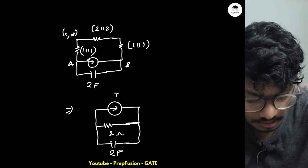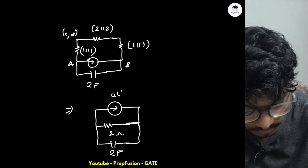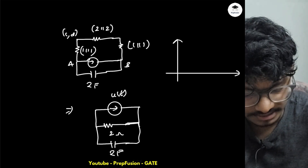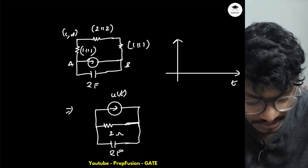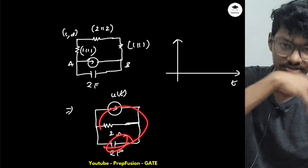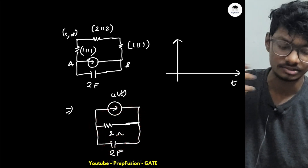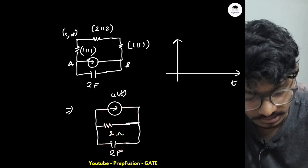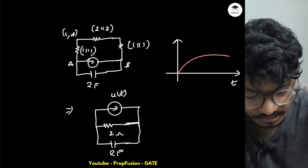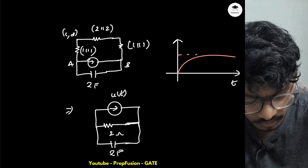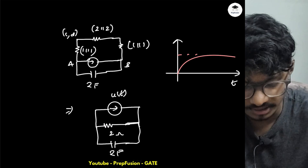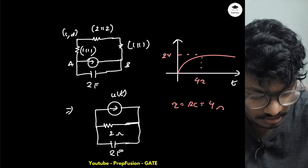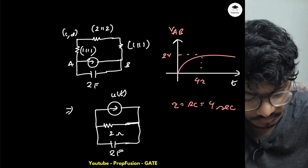The current source is a unit step u(t). For a simple parallel RC circuit: initially the capacitor is a short circuit so initial voltage across the resistor is zero. Then the capacitor charges, voltage rises exponentially. The final steady-state voltage is I × R = 1 × 2 = 2 V. The time constant τ = R × C = 2 × 2 = 4 seconds, and steady state is reached around 4τ. The waveform is exponential.